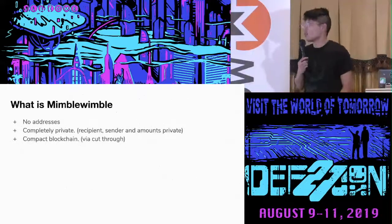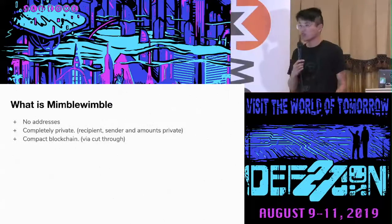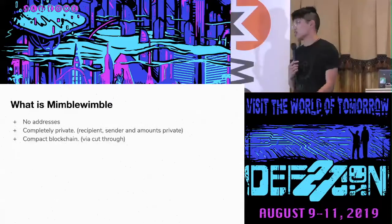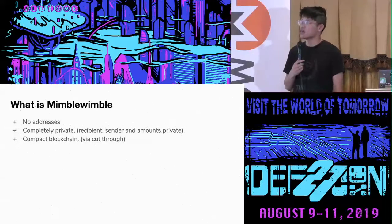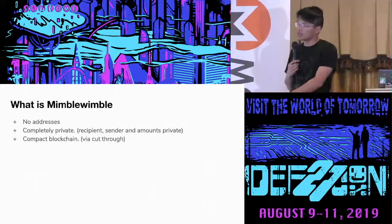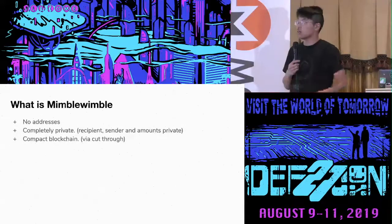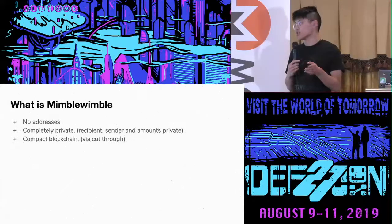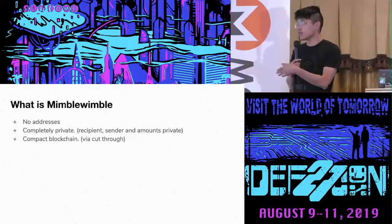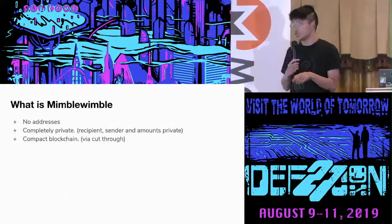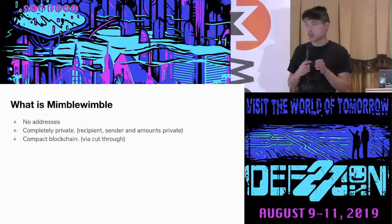Here's the fun part - what is MimbleWimble? It's a unique, novel private protocol that dropped on IRC in 2016. Unlike traditional blockchains, the concept of addresses would expose more detail. It's private in the sense that the recipient, sender, and amounts are private - but not the fee, which we'll go into later. It also has a compact blockchain using something called cut-through, which is conceptually similar to a CoinJoin that occurs over time, and it helps reduce the blockchain state, which is helpful for privacy under certain conditions.